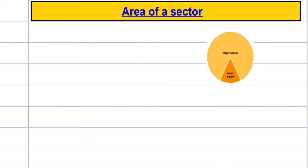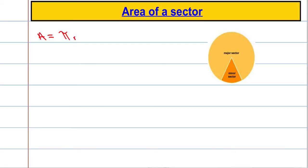We're going to derive the formula now for how we might find the area of a sector using radians. First of all we're going to consider the area of a circle. The area of a circle is normally found by doing pi times radius squared.